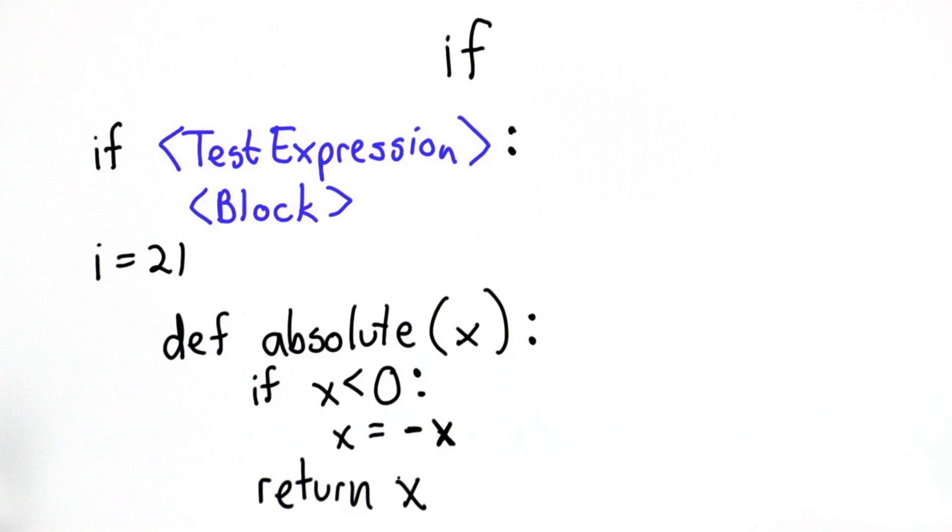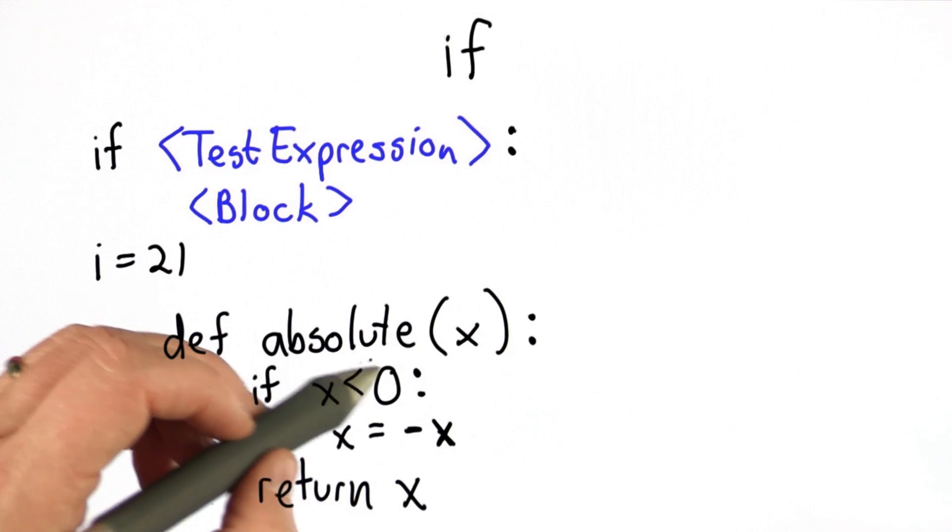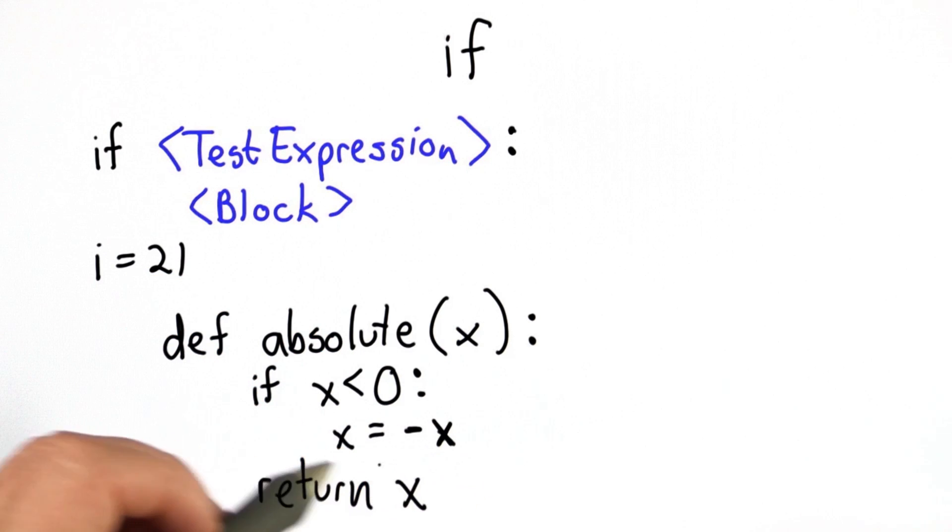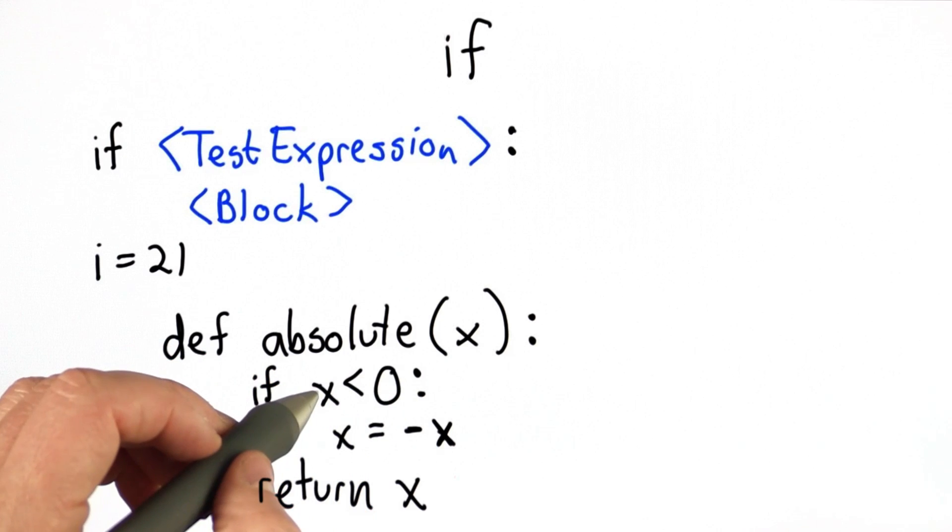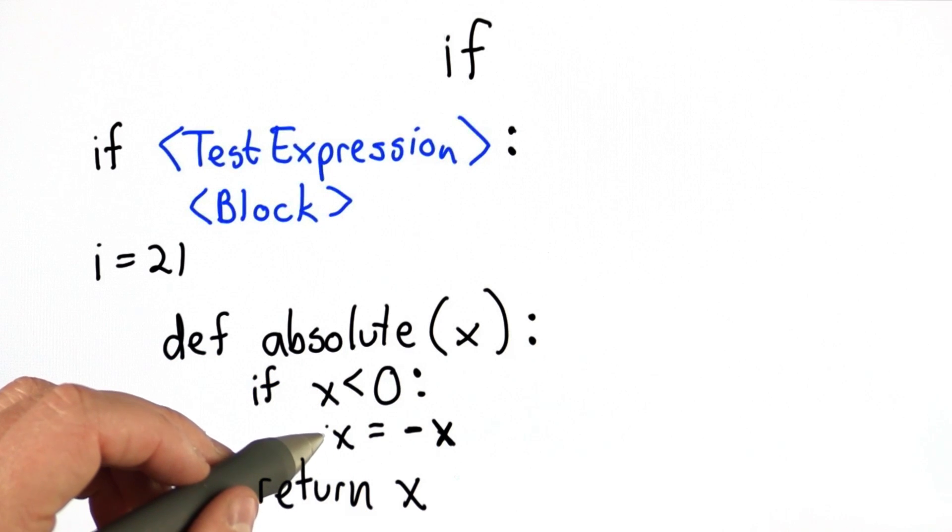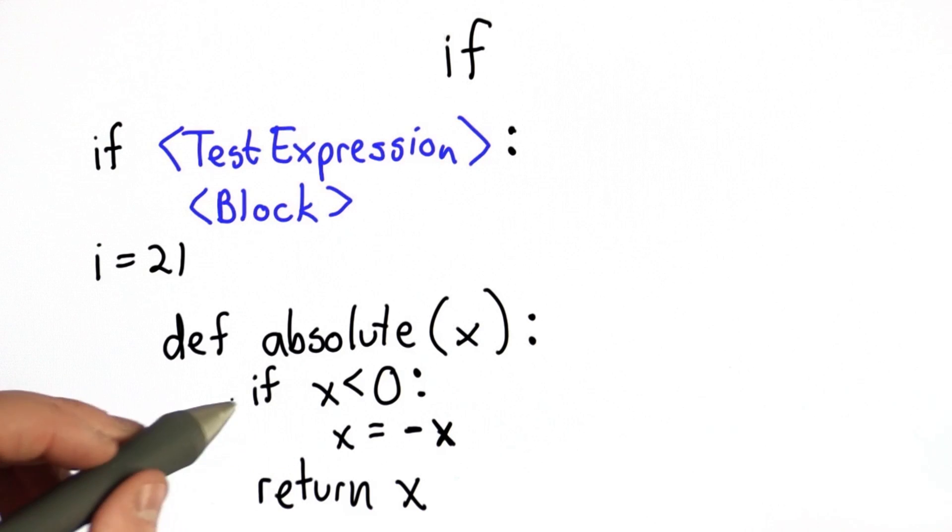So what this does is gives us the absolute value of the number that's passed in. If the number that's passed in is negative, we take its opposite, we use its negation. And then we return. If the number is positive, this test will be false, so we don't execute the block that changes the value of x to its negation. We'll go right to the statement that returns x.